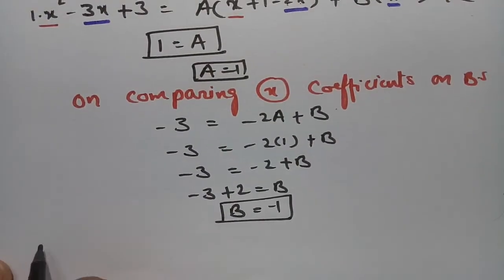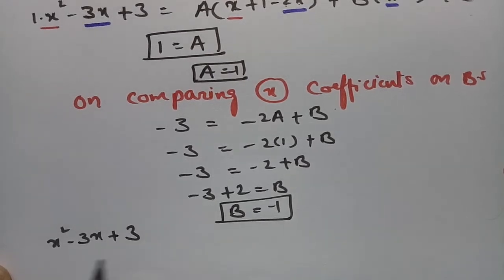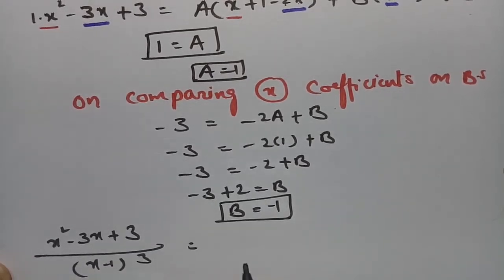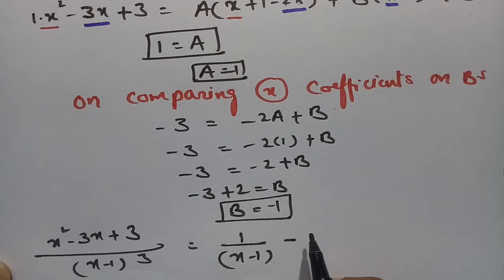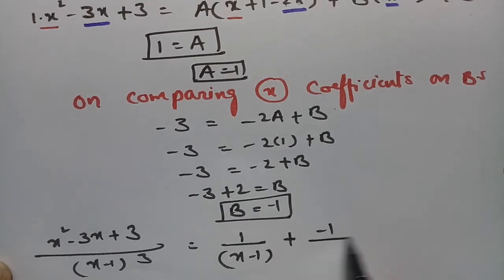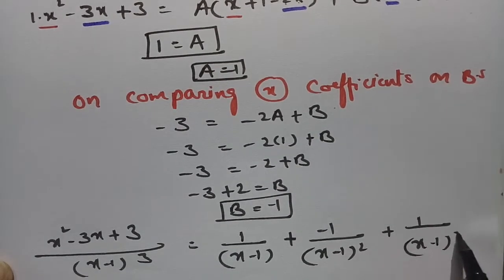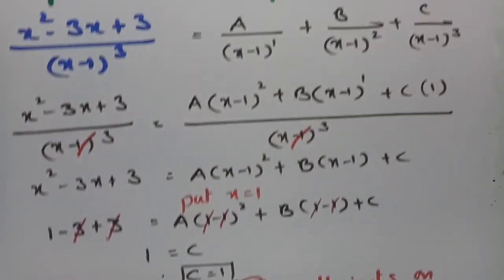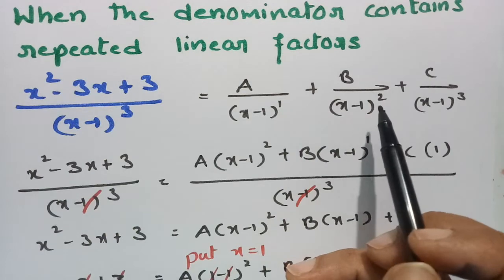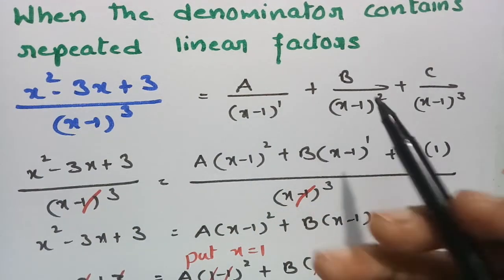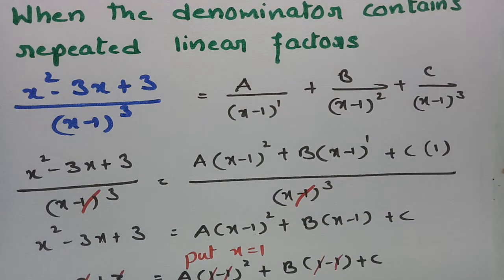Now A, B, C are all known. Substituting A=1, B=-1, C=1: (x²-3x+3)/(x-1)³ = 1/(x-1) + (-1)/(x-1)² + 1/(x-1)³. This is how we resolve when the denominator has repeated linear factors — we split into three terms since it repeats three times.